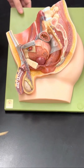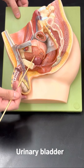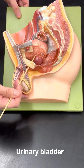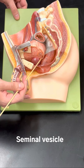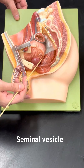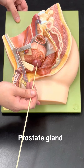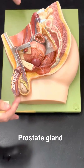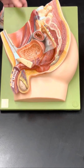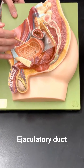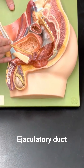Next we have the urinary bladder. We have the seminal vesicle, and the prostate gland. And on the inside we now have the ejaculatory duct.